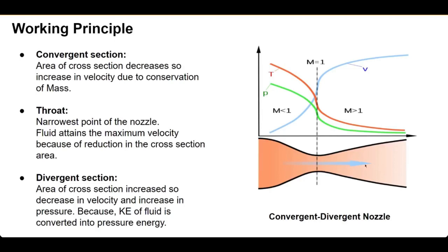In the divergent section, as we can see, there is a decrease in velocity and an increase in pressure, because the kinetic energy of the fluid is converted into pressure energy. We get an immense amount of pressure here compared to the ambient pressure — ambient pressure is about one atmosphere, and we can have 300 or 400 bars here. This pressure differential causes the flow to extremely accelerate in the divergent section and exit the nozzle.